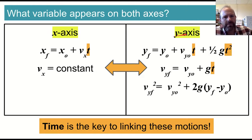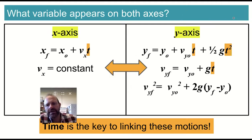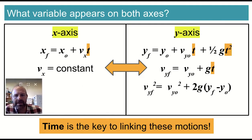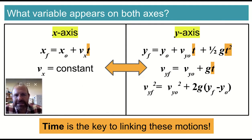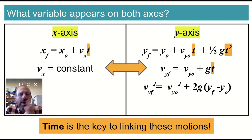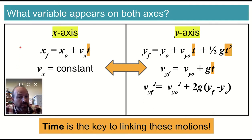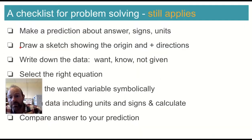So what variable appears on both axes that we can use in multiple situations? That is time. It turns out that time is the key to linking what you know in the x direction and what you know in the y direction. If you can find time from one of them, you can use that same time information in the other, which ends up being really helpful.